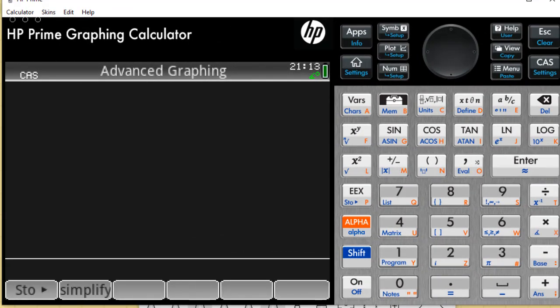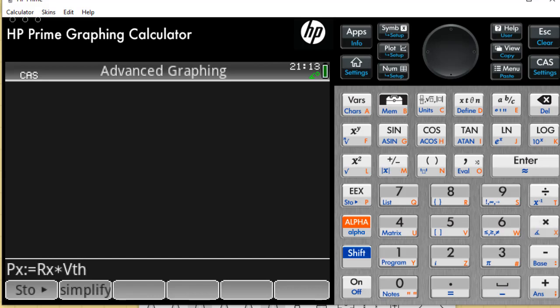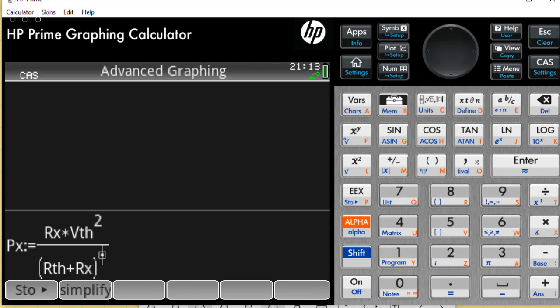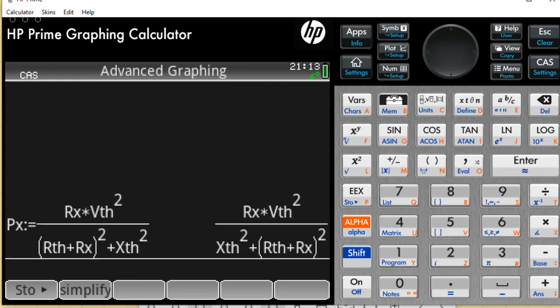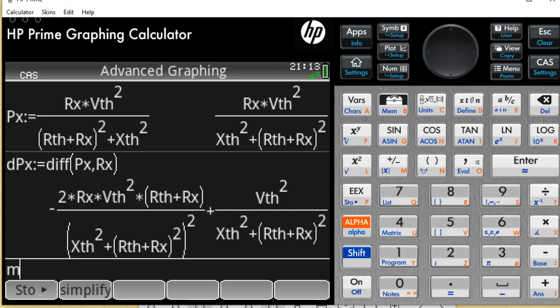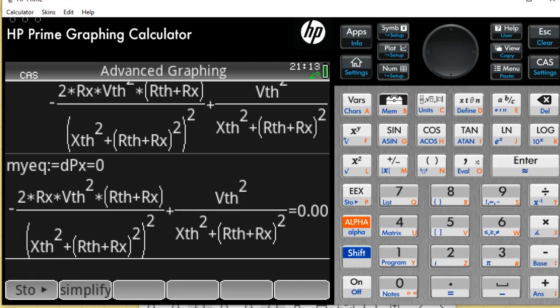We write that external power Px is Rx multiplied by the square of the RMS value of Vth divided by the square of the absolute value of the total impedance in the loop. And once we have that, differentiate that. I will call that dPx, the derivative of Px with respect to Rx. And my equation will be dPx equals zero. And that is the equation that I intend to solve.